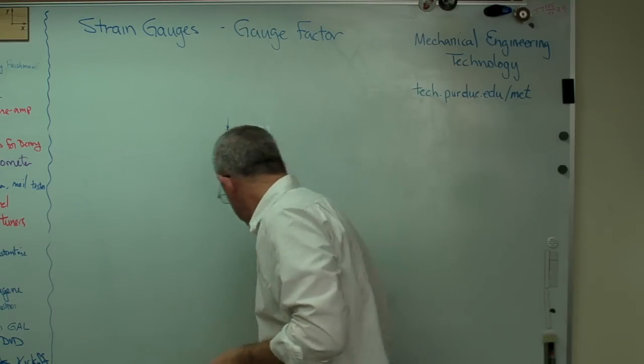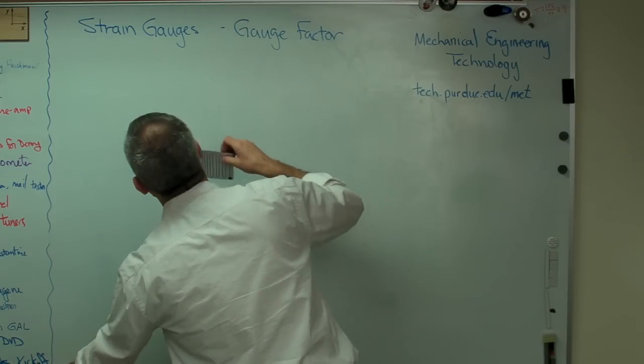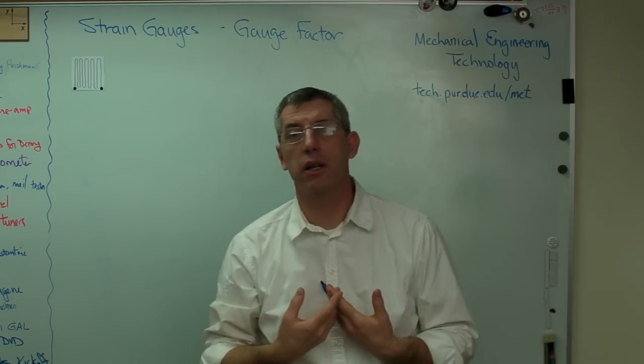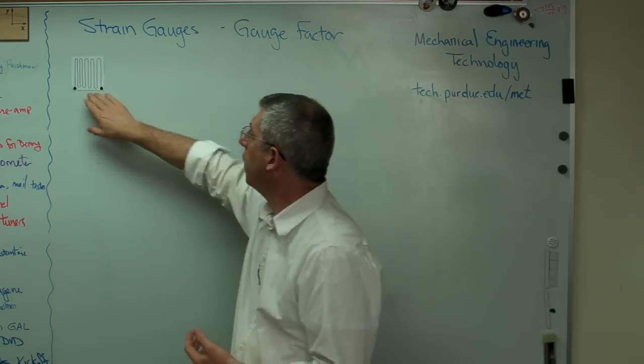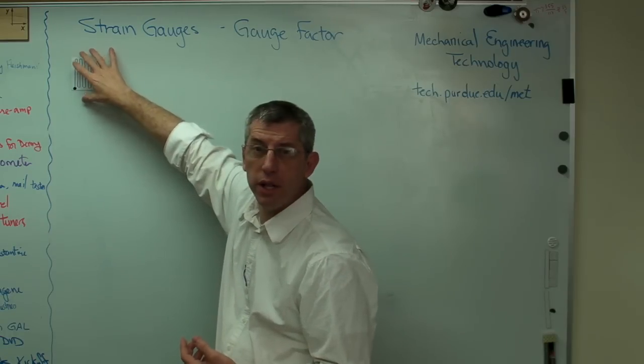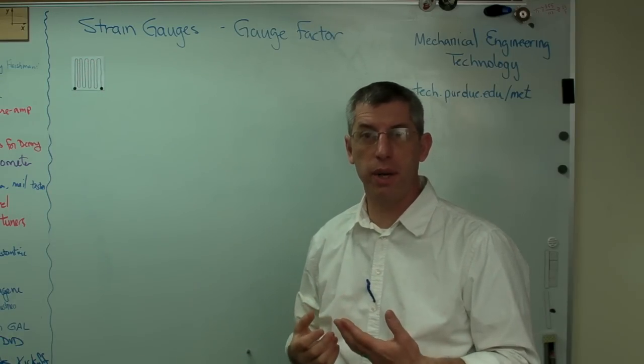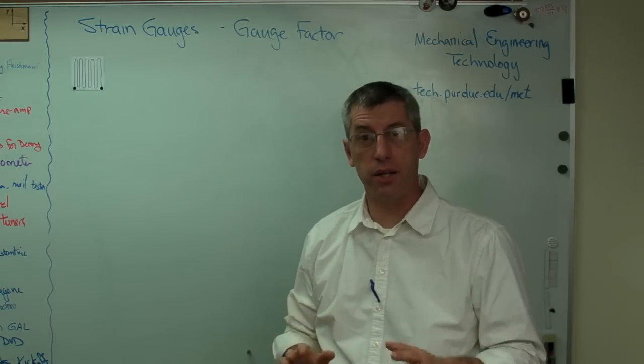So we know pretty much how the thing works now, or the gauge itself works, but we need to be able to do something very important. We need to be able to relate change in resistance to change in strain. Now the whole idea here is as those wires stretch and get just a tiny bit longer, the resistance goes up just a little bit. Now that's okay in words, but we need to be able to attach numbers to that.